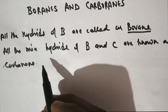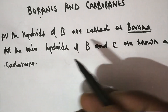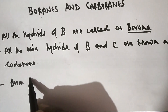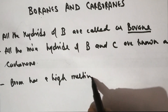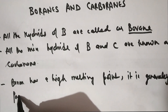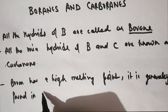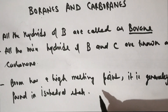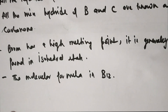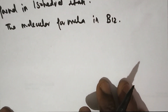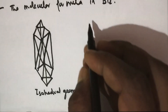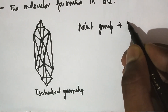Here we will first discuss why boron is important. Basically, when you see the chemistry of boron, you will understand that boron has a high melting point. It is generally found in the icosahedral state, and the molecular formula is B12. The general structure of this molecule has icosahedral geometry, and the point group of this molecule will be Ih.